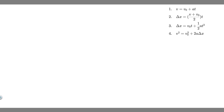In this problem, we're told a ball is thrown vertically upward with a speed of 25 meters per second. A: How high does it rise? B: How long does it take to reach its highest point? C: How long does the ball take to hit the ground after it reaches its highest point? And D: What is its velocity when it returns to the level from which it started?